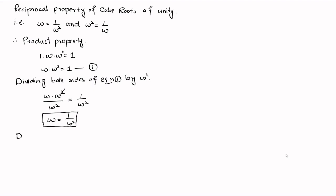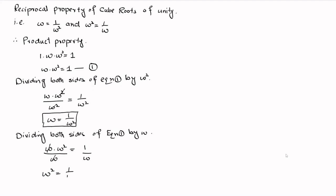Similarly, we will divide both sides of equation number 1 by omega. It can be written as omega multiplied with omega square is equal to 1, divided by omega. Omega cancels out with omega, so we have omega square is equal to 1 over omega — meaning omega square is the reciprocal of omega.